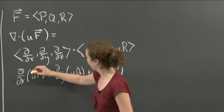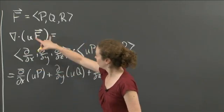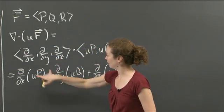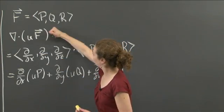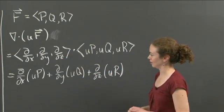We get del/dx of the quantity uP plus del/dy of the quantity uQ plus del/dz of the quantity uR. That's exactly what this symbolically means. So maybe I should write equals again. This is another equals. The top thing equals the next line down equals the next line down.